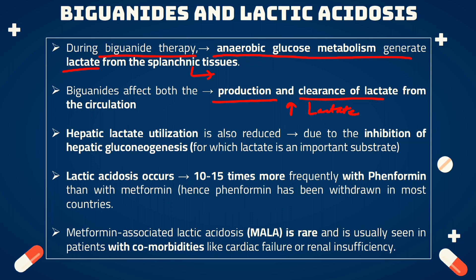It is also noted that hepatic lactate utilization is reduced. This is because there is inhibition of gluconeogenesis — the production of glucose from other substrates like lactate. As there is no hepatic gluconeogenesis occurring at the liver, there will be little or no utilization of lactate.